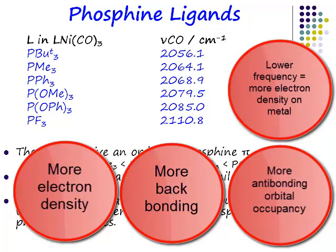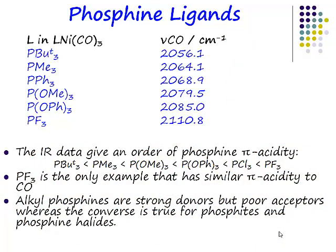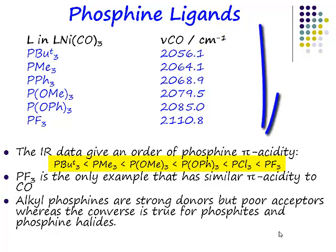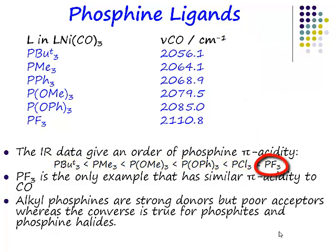Here is data for phosphine complexes of nickel tricarbonyl. The lower the frequency, the more electron density on the metal. The most electron-donating ligands, which are t-butylphosphine ligands, give rise to the lowest stretching frequencies. As you go down this series we have ligands that are less good donors. The trifluorophosphine ligand is the most electron-withdrawing one in the series and gives rise to the highest stretching frequency because there is the least amount of backbonding.